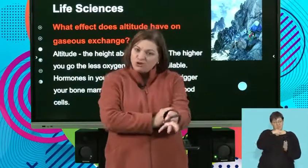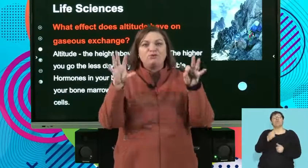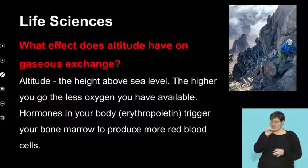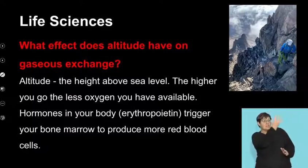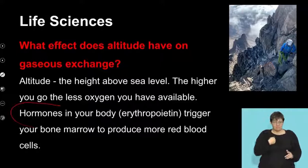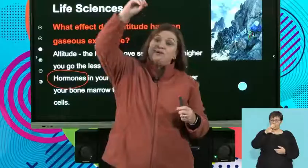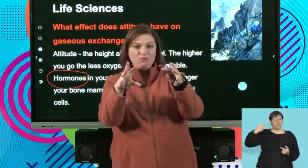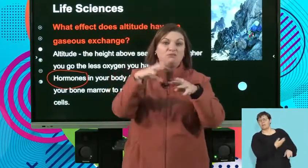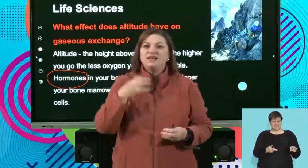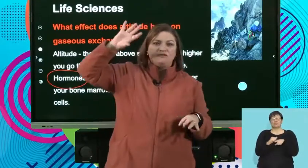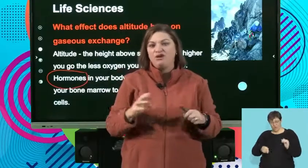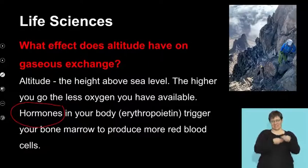Your body actually produces a hormone that goes to your bones and says: produce more red blood cells. So as soon as I go high up and there's not enough oxygen available, my body makes a plan — homeostasis. When oxygen is not available, the hormone triggers production of more red blood cells, and those red blood cells can bring in more oxygen. Sports teams often train at high altitudes, which makes them fitter when they compete at lower altitudes.